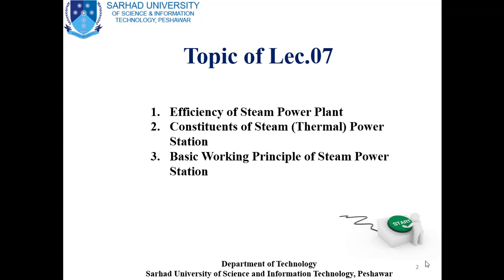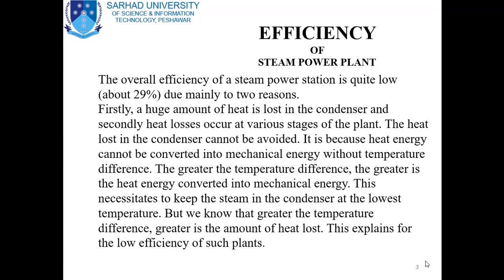Today we will cover these three topics. First is the efficiency of steam power plant. The overall efficiency of a steam power station is quite low — about 29% — due mainly to the following two reasons. Firstly, a huge amount of heat is lost in the condenser. Secondly, heat losses occur at various stages of the plant. The overall efficiency is approximately 29% because of these two reasons.